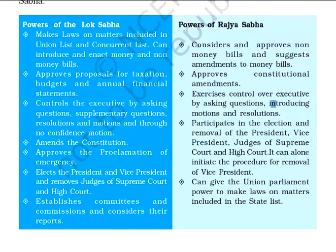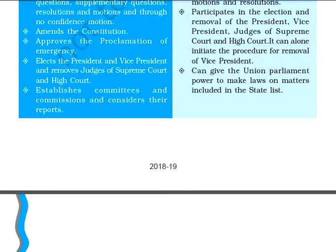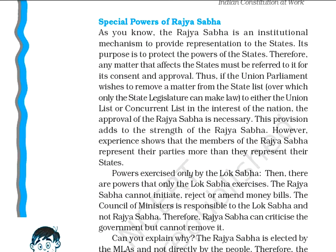Rajya Sabha can give the Union Parliament power to make laws on matters included in the State List. The next point is the special powers of Rajya Sabha. Rajya Sabha gives representation to the states and its purpose is to protect the powers of the states. Any matters related to states must be referred to Rajya Sabha for its approval and consent. In that situation, the approval of Rajya Sabha is very necessary, and this provision adds to the strength of Rajya Sabha.